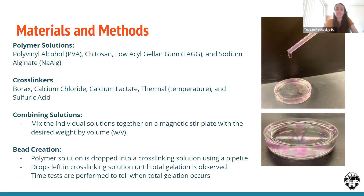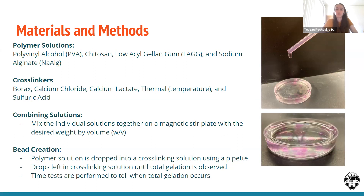We also tested different solution mixes by combining individual solutions together on a magnetic stir plate at the desired weight by volume. The method for bead creation was taking the polymer solution and using a pipette to drop it into the crosslinking solution until gelation was observed. When a successful solution had been identified, the process was taken further through a time trial. Time trials involve dropping many beads in at once, then at different time intervals taking a couple of beads out to test their properties and observe how they've changed. We're looking for the beads to become firm and strong.